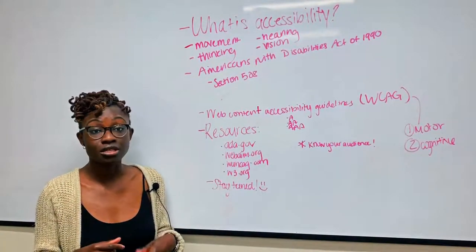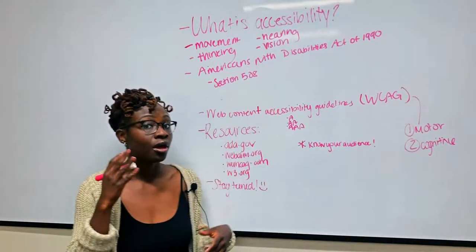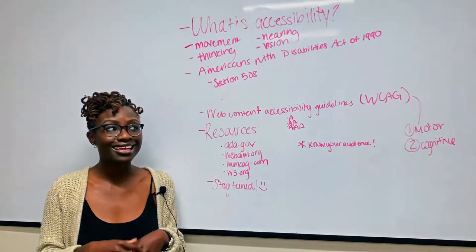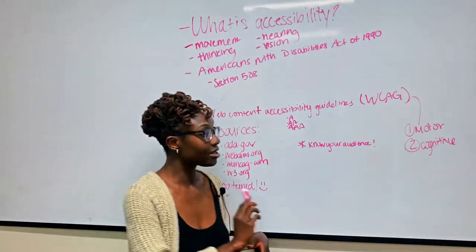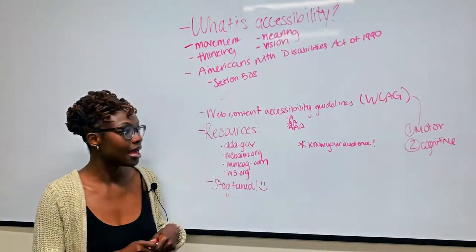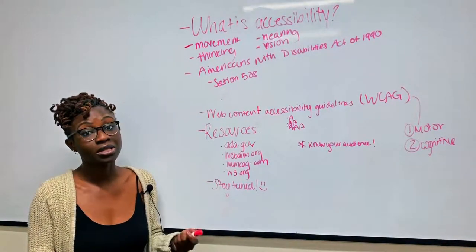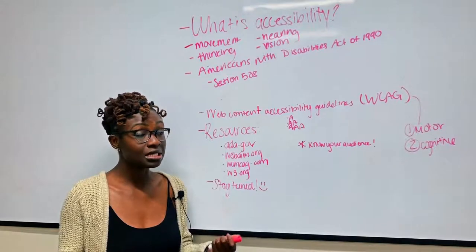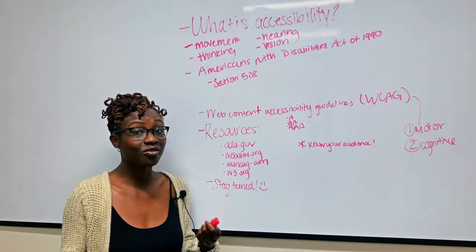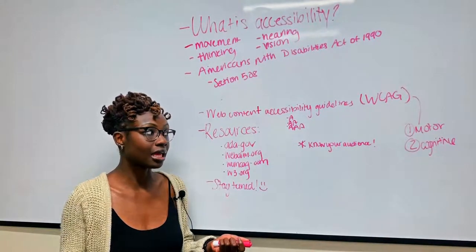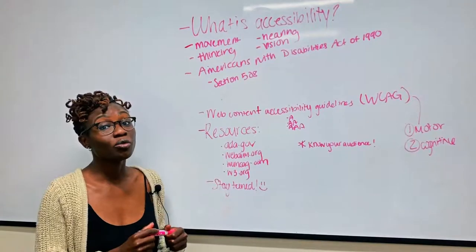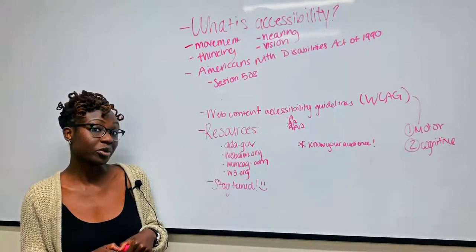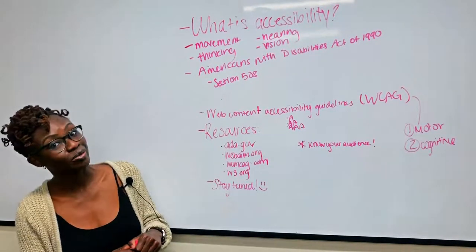The second largest impairment in America is cognitive, which affects how the person thinks, interacts, and maybe social relationships. A criteria that's interesting that affects the cognitively impaired person is three flashes or below. What this criteria says is that if there is an element that you interact with on your site that is flashy, it cannot flash more than three times in a second. Someone who may suffer from epileptic seizures will be severely affected by that flashy component and can't interact with your website, which we don't want.